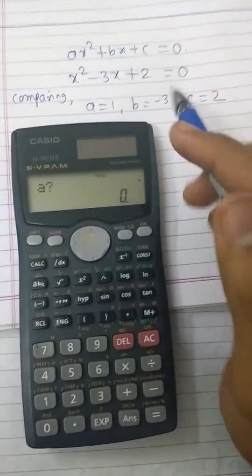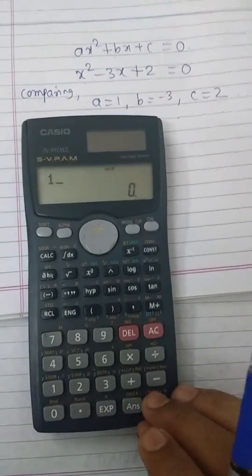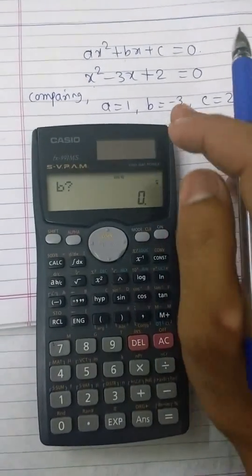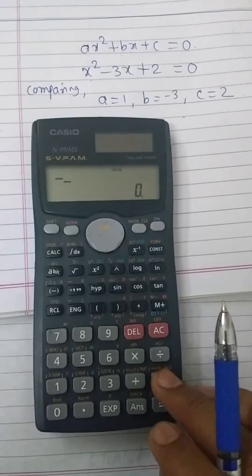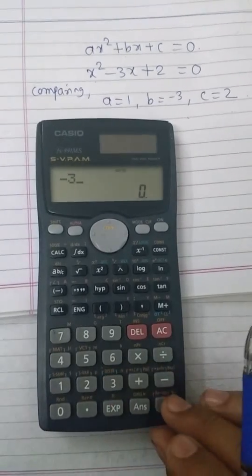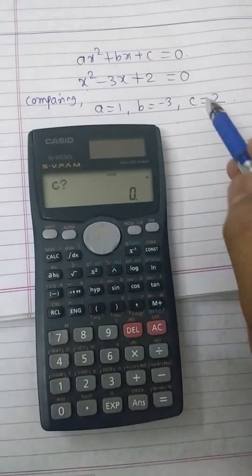Substitute all these values: a = 1, then press equal button, b = -3, press equal button, c = 2.